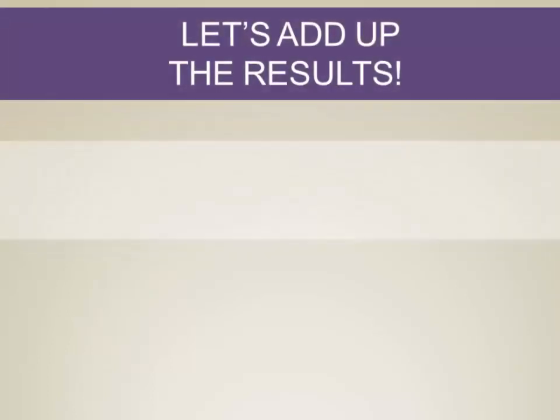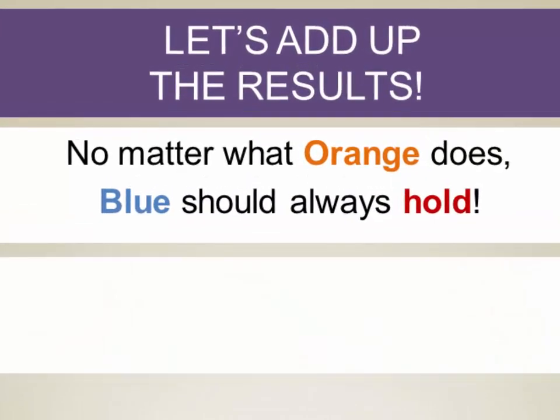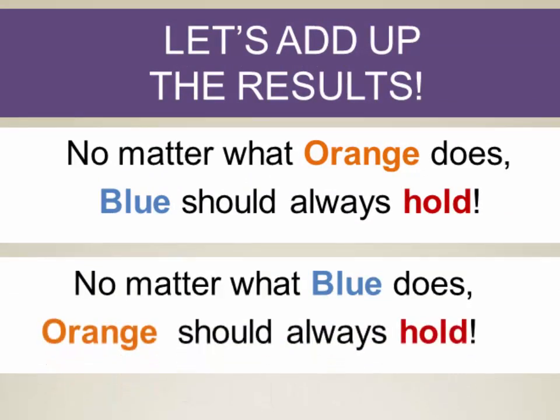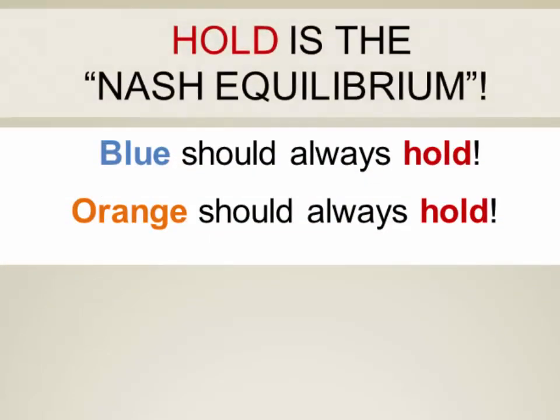If we put these results together: no matter what orange does, blue should always hold; and no matter what blue does, orange should always hold. This tells us that this game is going to be very boring — quite predictable — because they only have one shot to play this. They play one hand, and they each know that they're going to come out best if they simply hold their card. So blue should always hold, orange should always hold — that means that 'hold' in this game is what's called the Nash equilibrium.